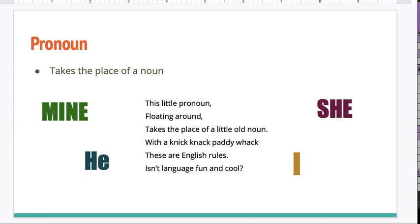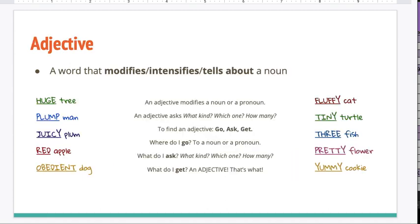The next part of speech, the fourth one, is adjective. What is it? Get ready. Yes, adjective. An adjective is a word that modifies, intensifies, or tells about a noun. Here are some examples of adjectives.